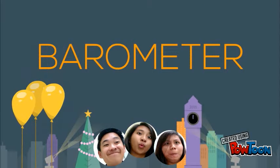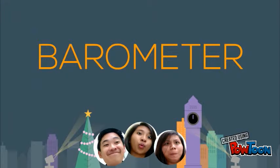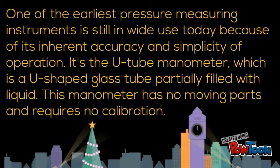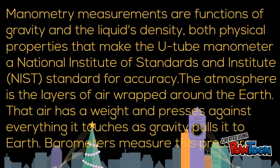One of the earliest pressure measuring instruments is still in wide use today because of its inherent accuracy and simplicity of operation — the U-tube manometer. It is a U-shaped glass tube partially filled with liquid, with no moving parts and no calibration required. Manometry measurements are functions of gravity and the liquid's density, both physical properties that make the U-tube manometer a NIST standard for accuracy.